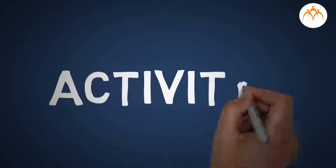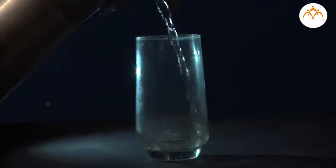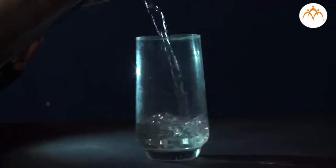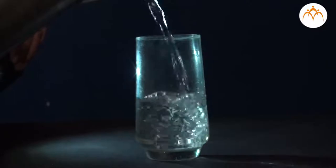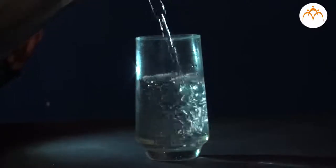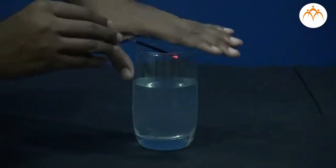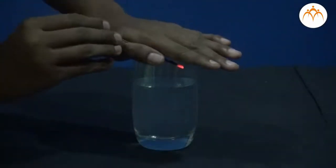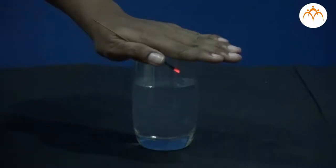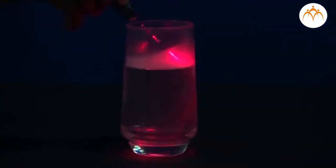Fill a transparent glass halfway with water. Add some Dettol in it such that it becomes a bit hazy. Burn an incense stick and insert its smoke inside the bottle. Now we have half water and half air in the glass, both being a bit hazy. Make the room a bit dark and shine a laser from above such that it first passes through the smoke and then the water. The purpose of making both media hazy is so that we can see the full path of the light.